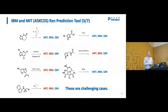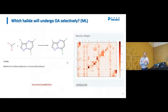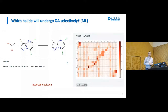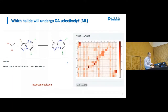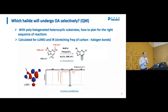Due to time constraints, I'm going to focus on the second row: the cross-coupling reaction and the alkylation reaction. In one substrate we have a bromine and two chlorides. The IBM reaction prediction tool predicts with 98% confidence that the cross-coupling will occur on the bromine. I would predict the same — bromine is generally more reactive than chloride.